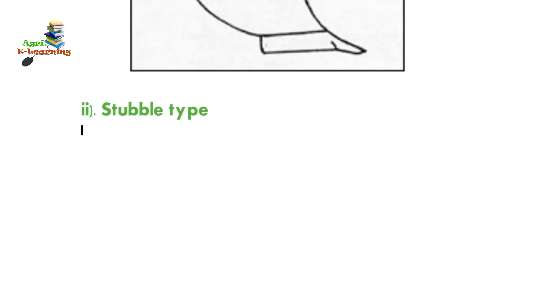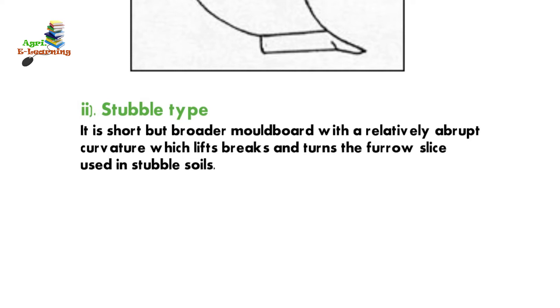Stubble type: it is a short but broader moldboard with a relatively abrupt curvature which lifts, breaks, and turns the furrow slice. Used in stubble soils.